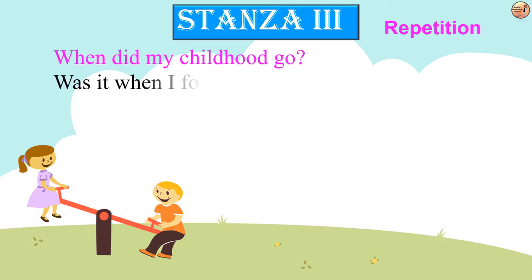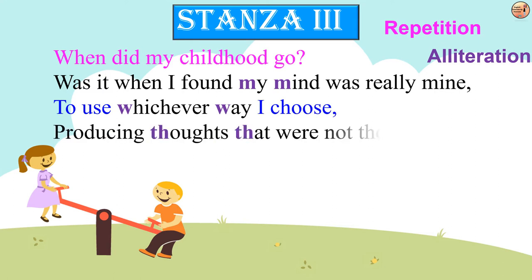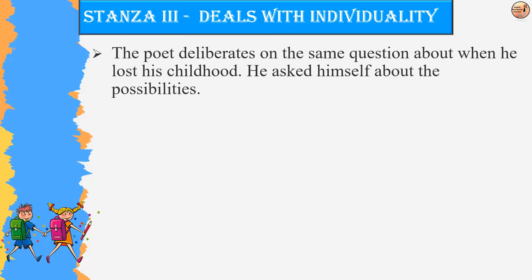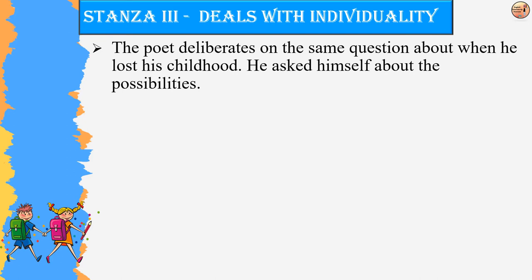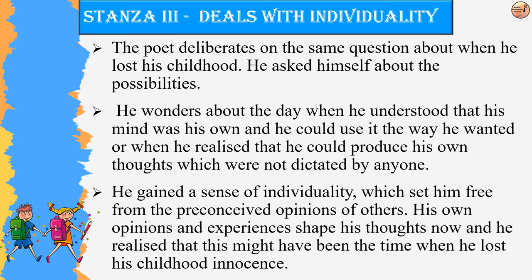Stanza 3: 'When did my childhood go? Was it when I found my mind was really mine, to use whichever way I choose, producing thoughts that were not those of other people, but my own and mine alone? Was that the day?' In the third stanza, the poet deliberates on the same question. He wonders about the day when he understood that his mind was his own. He realized he could produce his own thoughts, gained a sense of individuality, and this might have been the time he lost his childhood innocence.